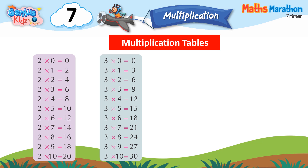3 into 0 is equal to 0. 3 into 1 is equal to 3. 3 into 2 is equal to 6. 3 into 3 is equal to 9. 3 into 4 is equal to 12. 3 into 5 is equal to 15. 3 into 6 is equal to 18. 3 into 7 is equal to 21. 3 into 8 is equal to 24. 3 into 9 is equal to 27. 3 into 10 is equal to 30.